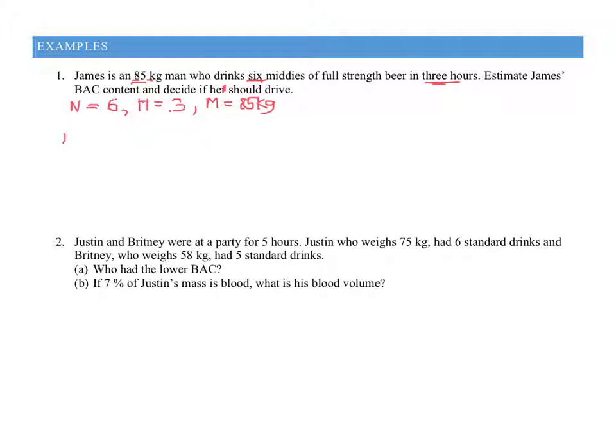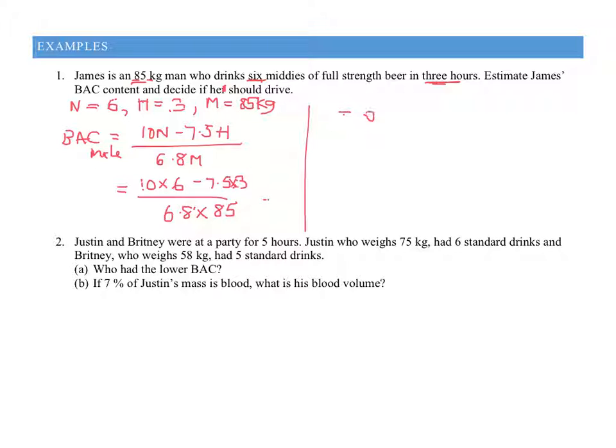We'll write out the formula for a male: 10N minus 7.5H over 6.8M. All we have to do now is plug in the information. We've got 10 times 6 minus 7.5 times 3, all over 6.8 times 85. We pop that into the calculator and get 0.0648.